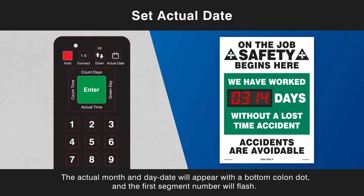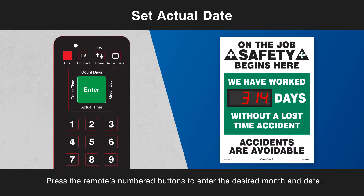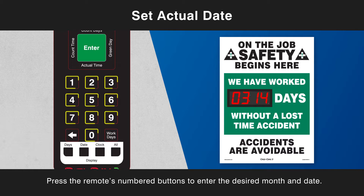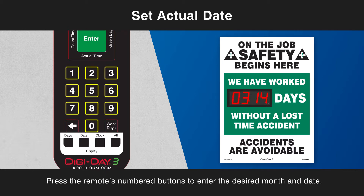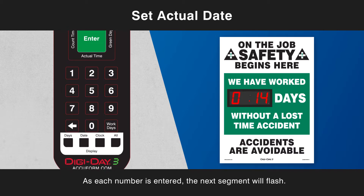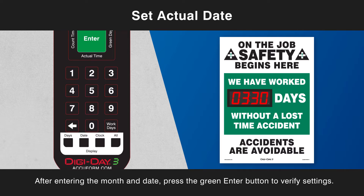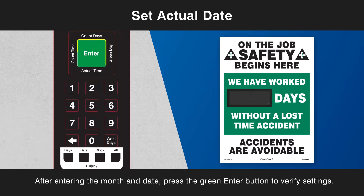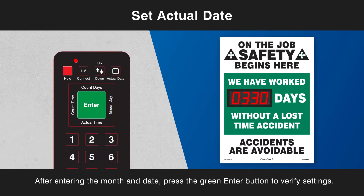The actual month and day date will appear with the bottom colon dot, and the first segment number will flash. Press the remote's numbered buttons to enter the desired month and date. As each number is entered, the next segment will flash. After entering the month and date, press the green enter button to verify the settings.